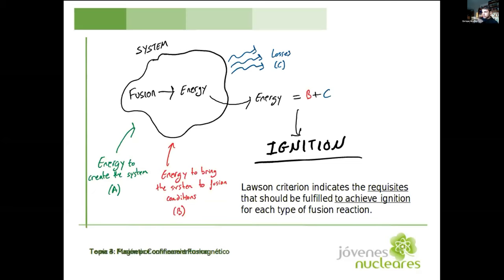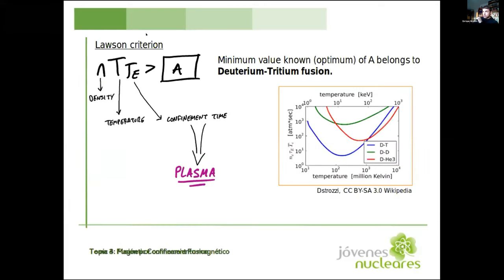The Lawson criterion tells us what are the requisites that should be fulfilled to achieve ignition for each type of fusion reaction. This Lawson criterion is a triple product of the density, the temperature, and the energy confinement time, and this product has to be greater than some value A. We know this value A is the minimum for the deuterium-tritium fusion reaction. That's why we aim to make deuterium-tritium fusion, because it's the easiest one.